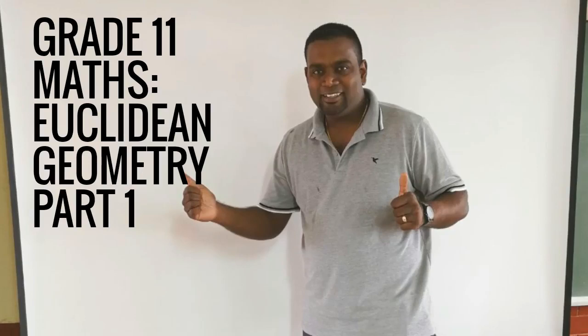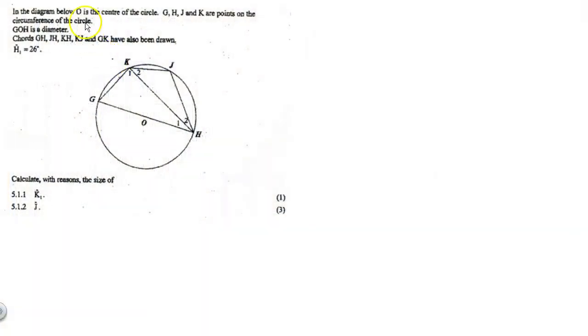Okay, so in this particular example, let's read the question. It says in the diagram below, O is the center of the circle.